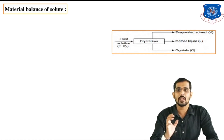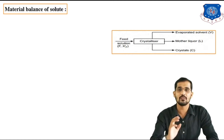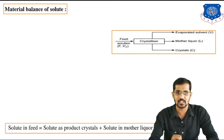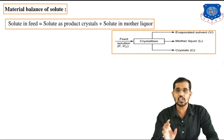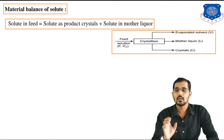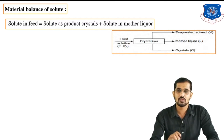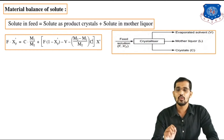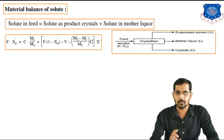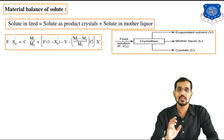Now we will take the material balance of the solute in crystallization. According to the solute balance: solute in feed = solute as product crystals + solute in mother liquor. In notation: F × XF' = C × (M1/M2) + [F(1 − XF') − V − (M2 − M1)/M2 × C] × X'.